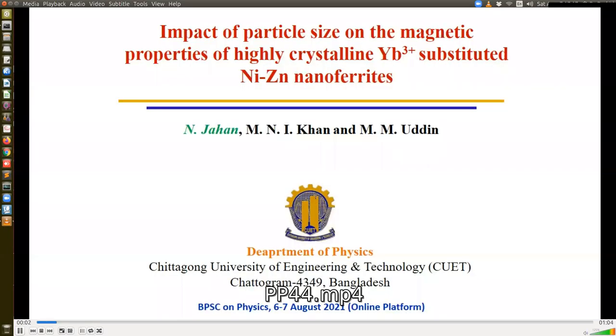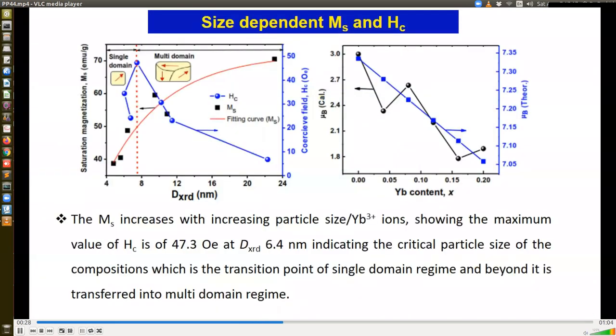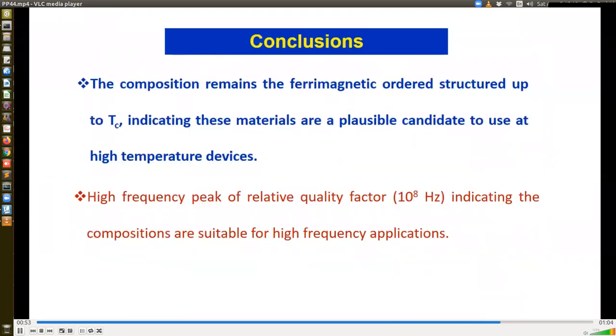Here the research article is Impact of Particle Size on the Magnetic Properties of Hexagonal Crystalline Erbium Substituted Nickel Zinc Nanoferrites. At first the samples are made by sol-gel auto combustion technique. After preparing the samples, characterization are done by using these tools. It is very important to find the critical particle size of the composition. Here the critical particle size is 6.4 nanometer which is the transition point from single domain to multi-domain. Permeability increases with frequency up to a certain frequency then it decreases to 120 megahertz which was successfully explained by domain wall and spin rotation mechanism. The relative quality factor is maximum for x equal to zero and does not show complete peak because the frequency is out of our instrument range. The compositions remain ferromagnetic order up to Curie temperature indicating the samples are suitable for high temperature devices. High frequency peak of relative quality factor indicating the compositions are suitable for high frequency applications.